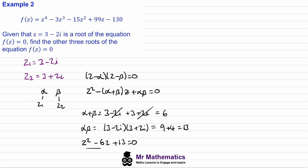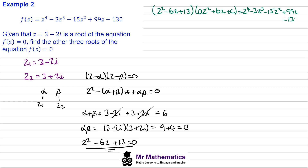We use the method of equating terms to find the second quadratic factor. We know z squared minus six z plus thirteen multiplied by a general quadratic az squared plus bz plus c equals the quartic z to the four minus three z cubed minus fifteen z squared plus ninety-nine z minus one hundred thirty. Comparing the z to the four terms, a times z to the four must equal z to the four, so a equals one.